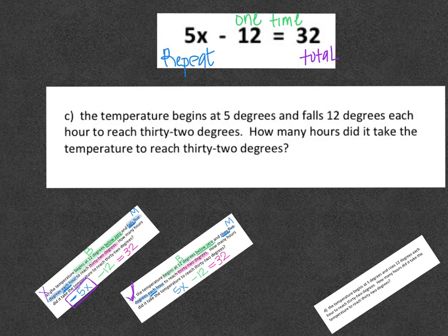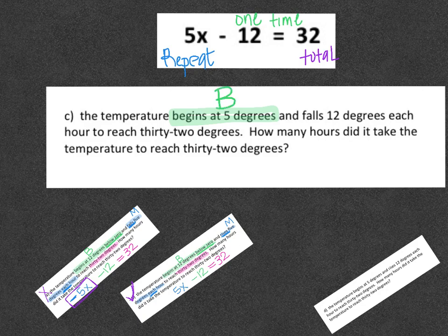Answer choice C. I'm going to read through. The temperature begins at 5 degrees. That's my starting amount and it's positive. That means my one time amount is 5. So I'm going to put plus 5. Then I'm going to keep reading. This one says falls 12 degrees each hour.